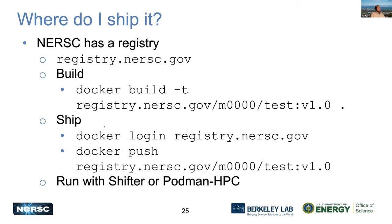The other two portions are ship and run. To ship your container, you can push to Docker Hub, or NERSC has its own registry. You add the registry URL (registry.nersc.gov/your-M-account-name) and give it a name to tag the image. Then Docker push uploads it to our registry. Before shipping, you need to log into the registry with docker login using your regular NERSC password. Once shipped, you can run these images with either Shifter or Podman HPC.